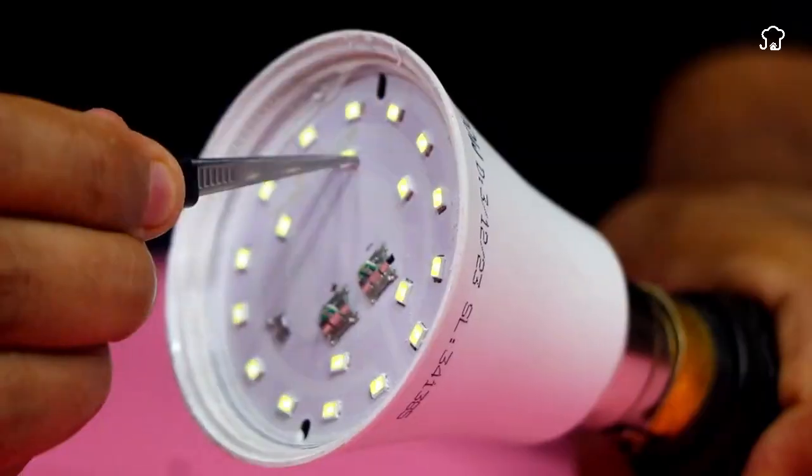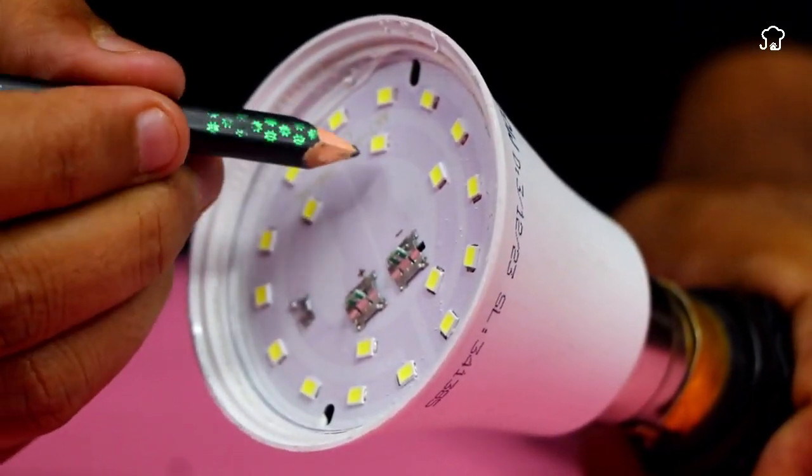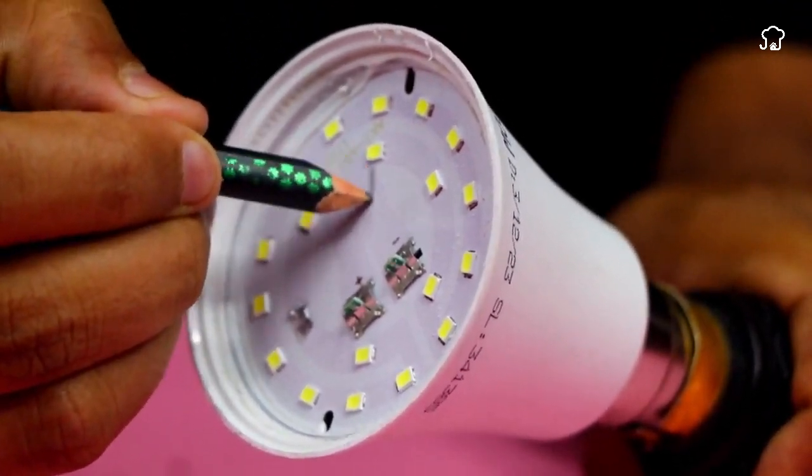Once the defective filament is located, we'll mark a small line on the part that is failing using a pencil. This mark will serve as a guide for the next steps.